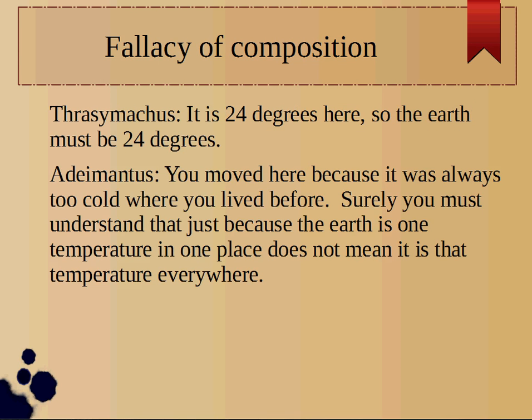In the first one, Thrasymachus is looking at temperature. He says it is 24 degrees here, so the Earth must be 24 degrees altogether. Adamantus points out: you moved here because it was always too cold where you lived before. Surely you must understand that just because the Earth is one temperature in one place does not mean that it is that temperature everywhere.